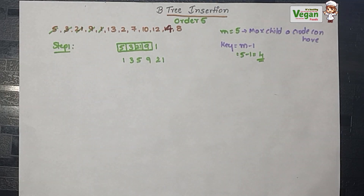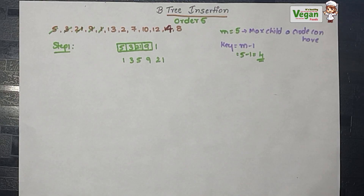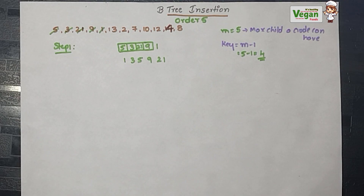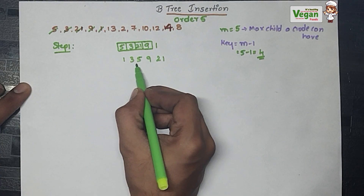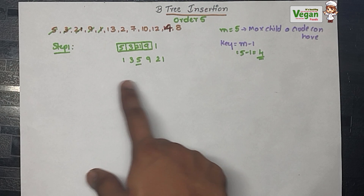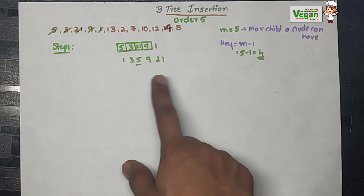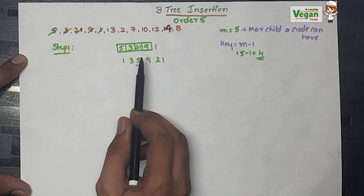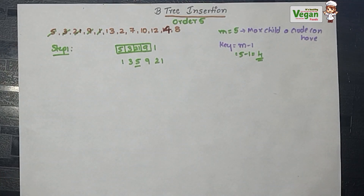Now search for the median or middle element. We have 5 elements, so the third element will be selected as the median. That is 5 — with 2 elements on each side. This median or middle element will be taken one level up.